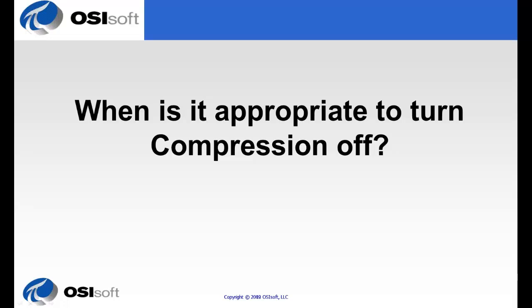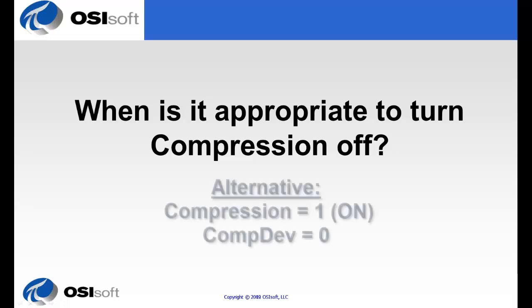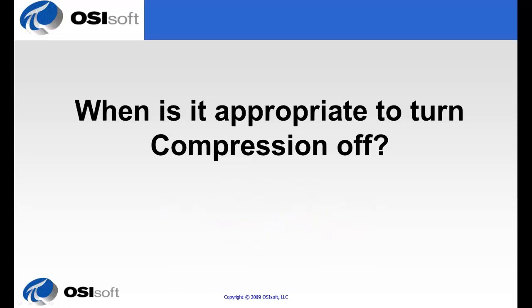A suggested better option to turning compression completely off is to set compression to on, but to set the compression deviation to zero. This means that successive identical values will not be archived. For example, a value of off that is sent to the archive and is followed by another off will not be added. This is much more efficient.